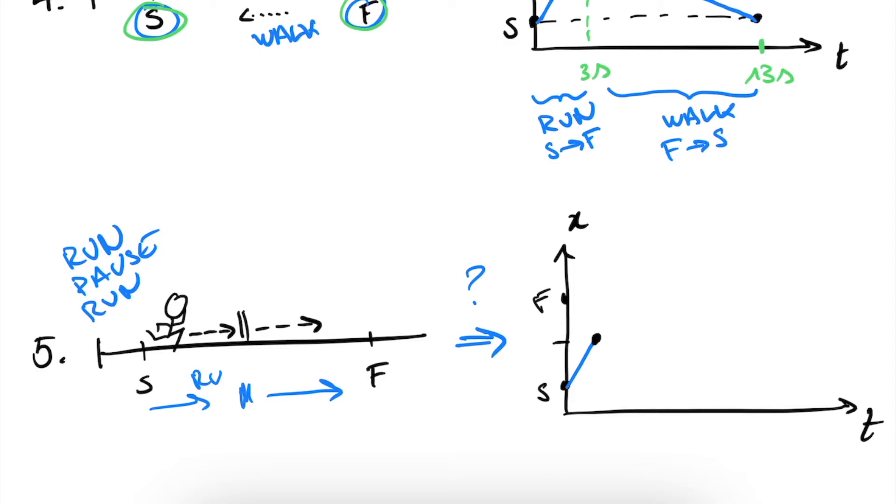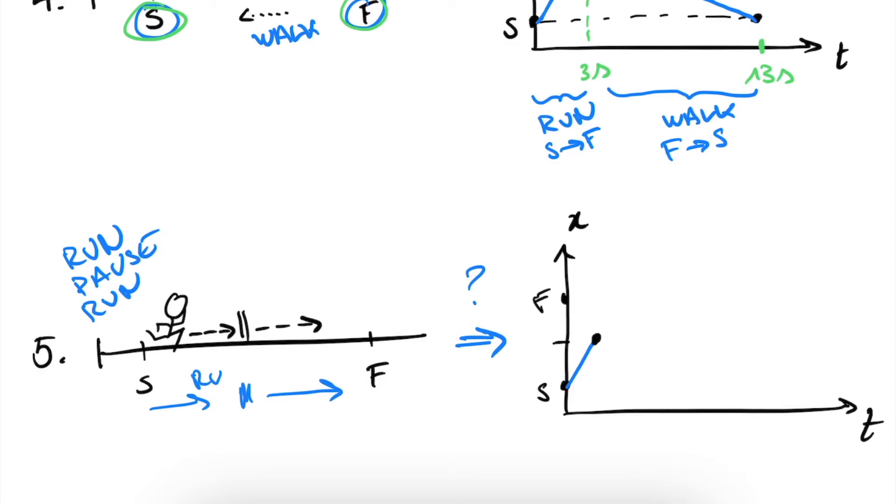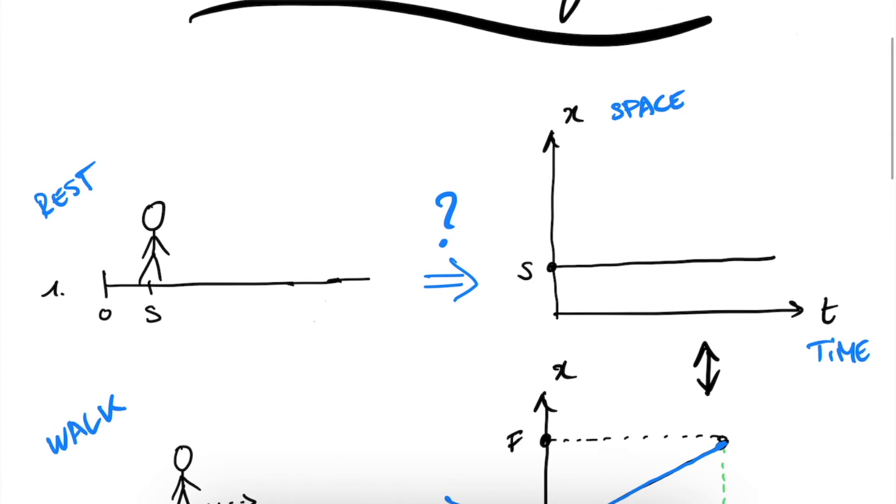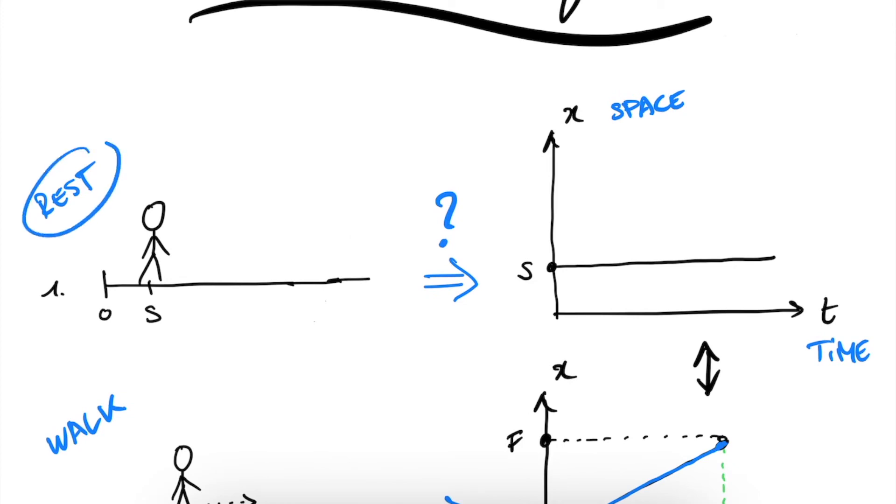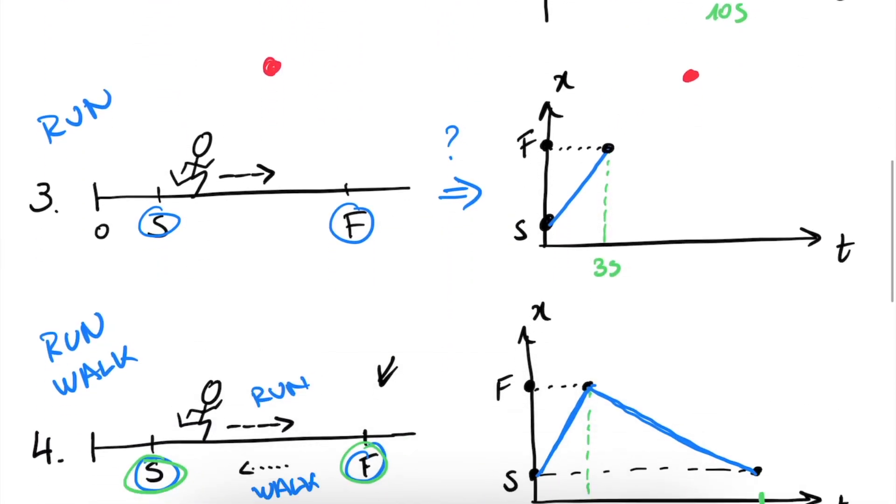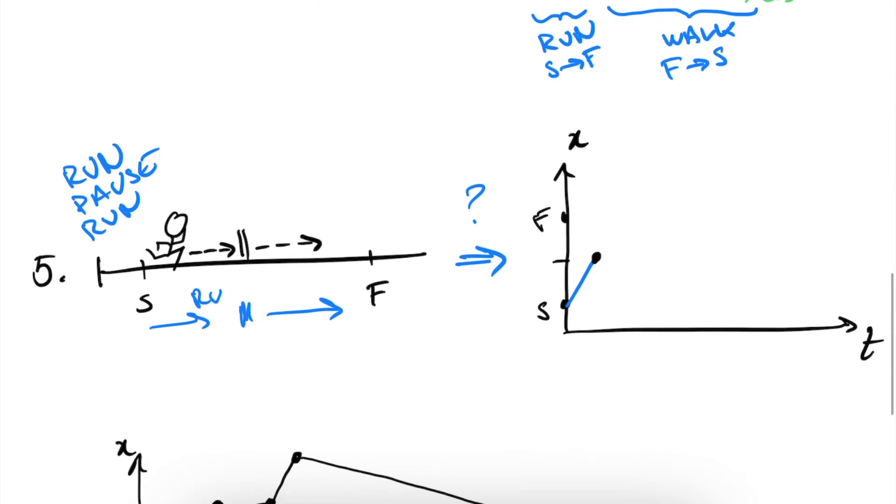What we then do is we pause. And we know from our initial example that pausing is basically resting, and it's doing nothing. So we get this flat curve because X does not change over time.